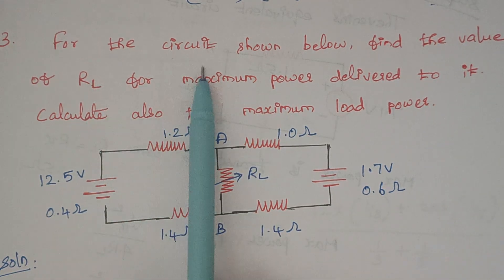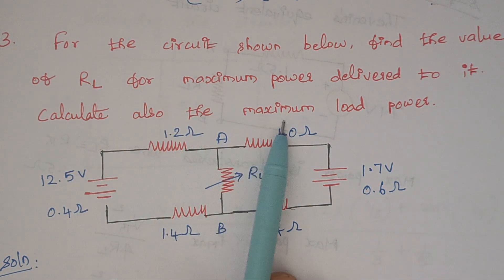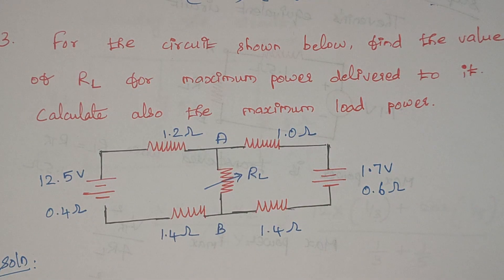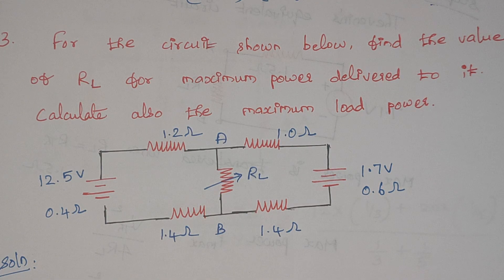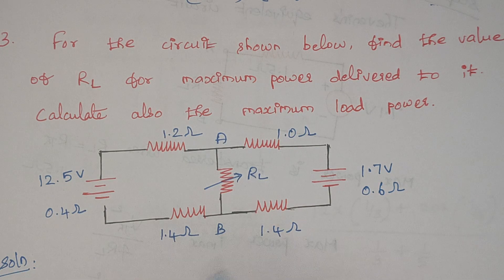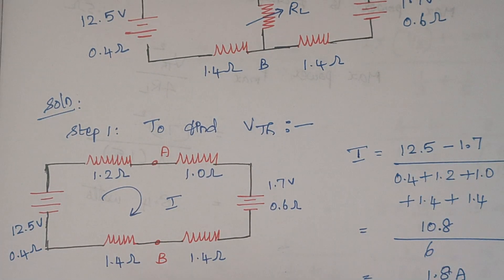Now we will proceed with our third one. The problem is: for the circuit shown below, find the value of RL for maximum power delivered to it. Calculate also the maximum load power. So here again the same thing — we need to calculate RL for maximum power transfer, then we need to calculate the maximum power across the load resistance. As usual, we need to calculate Thevenin's voltage and Thevenin's resistance or Thevenin's impedance. The first step is to calculate Thevenin's voltage. To calculate Thevenin's voltage, we have to remove the load resistance RL and redraw the circuit. Our circuit looks like this.